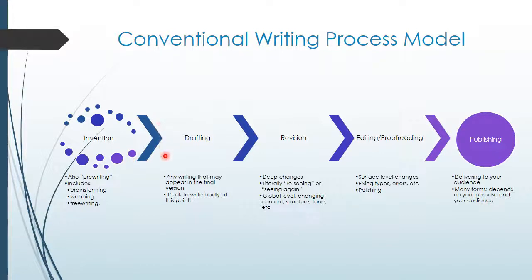Conventionally, after you've done your invention, you move on to drafting, which is where you actually do the writing. It's okay to write badly at this point because it's only a draft — this is the point where you generate text.